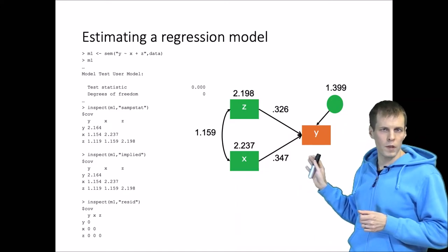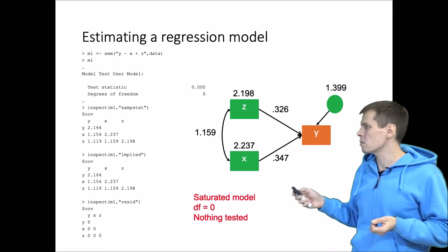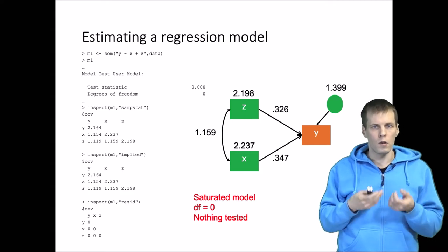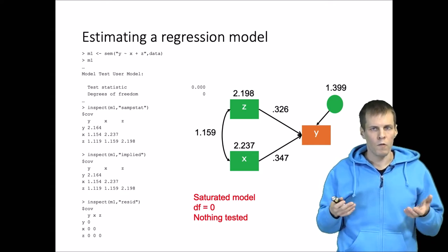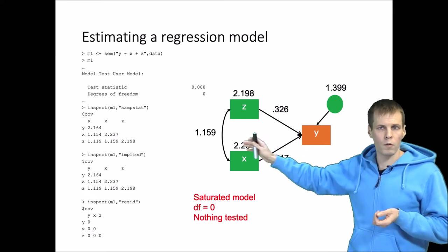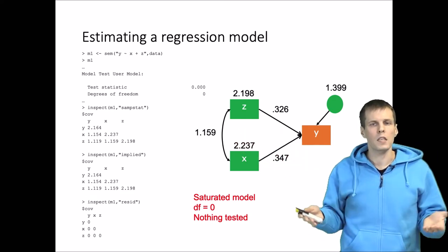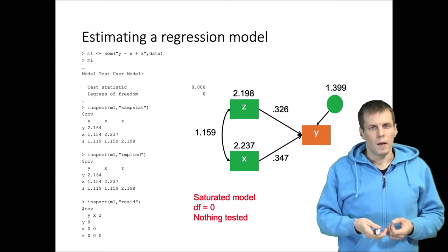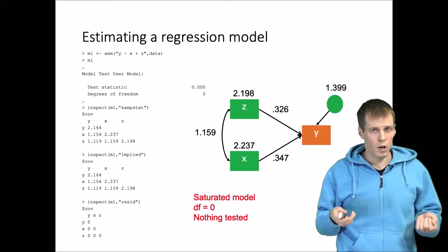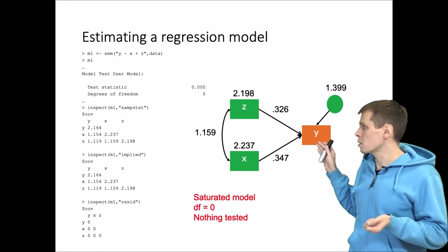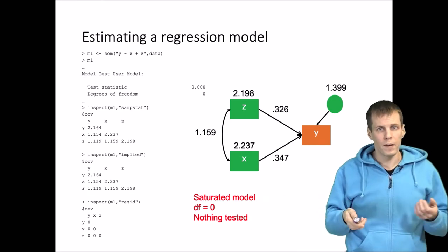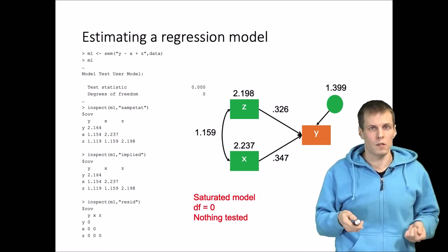The regression model is saturated, meaning the degrees of freedom are zero and nothing is being tested. We have six unique units of information from the data — three variances and three covariances — and we are estimating six things: two variances, one error variance, one covariance, and two regression paths. So nothing is being tested; this is a saturated model. The fact that the chi-square test does not reject this model does not mean the model is correct, because we could equally swap Y and X and the model would still fit perfectly. It cannot be tested.